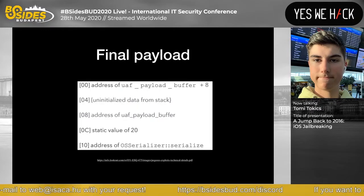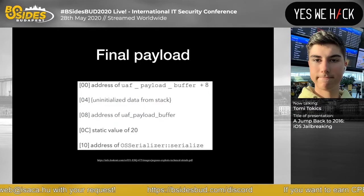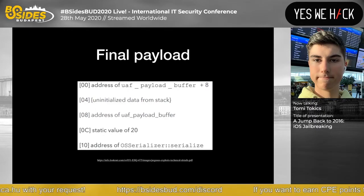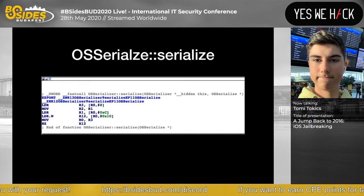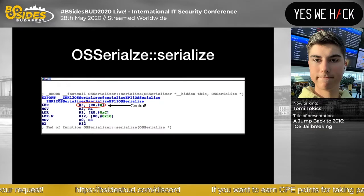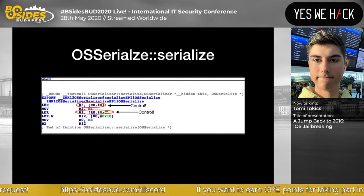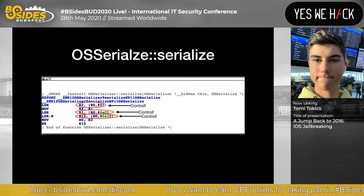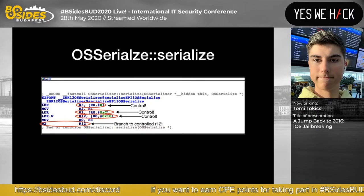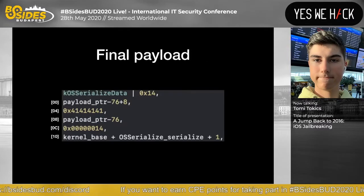That function will be OSSerializer::serialize. The final payload contains: the address of copyin, some stack address, our real payload address, some values, and the gadget. The OSSerializer::serialize gadget gives us control of R0 first, then R3, then R1, and finally R12 — and since there's a branch to R12, we have an execute primitive.